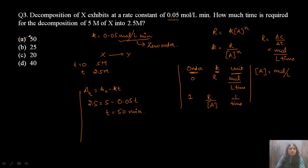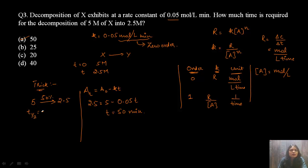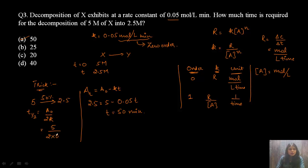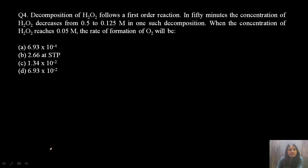A quick trick: the concentration is going from 5 to 2.5 M, which is 50% — so you are being asked for the half-life. For zero order, t½ = A₀/2K = 5/(2 × 0.05) = 50 minutes. Moving to the next question: decomposition of H₂O₂ → H₂O + ½O₂.